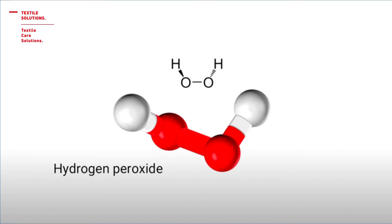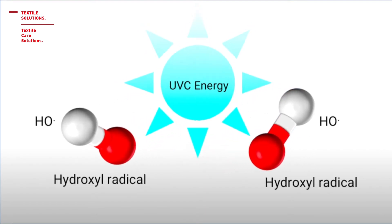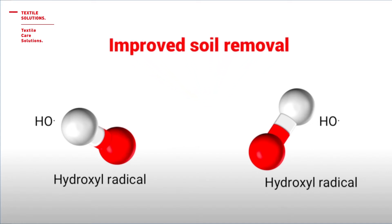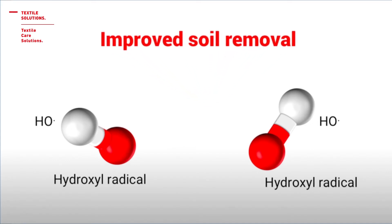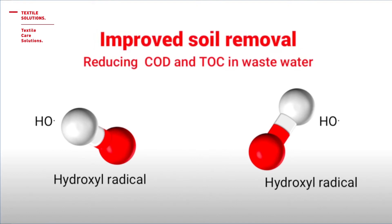That's the structural formula of peroxide. What happens with the peroxide under the influence of UVC power? It produces so-called hydroxyl radicals. Those hydroxyl radicals are often referred to as the detergent of the troposphere because they react with many pollutants, decomposing them through cracking until complete removal and elimination. Thereby we achieve a maximum of soil removal plus a significant reduction in COD and TOC.